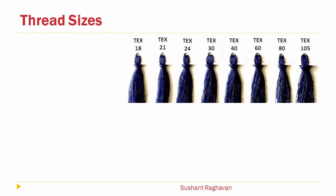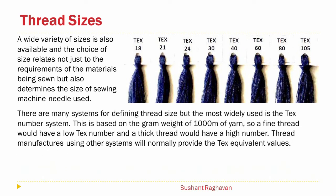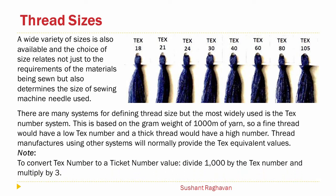Thread sizes. A wide variety of sizes is available, and the choice of size relates not just to the requirements of the materials being sewn but also determines the size of sewing machine needle used. There are many systems for defining thread size, but the most widely used is the tex number system. This is based on the gram weight of 1,000 meters of yarn, so a fine thread would have a low tex number and a thick thread a high number. Thread manufacturers using other systems will normally provide the tex equivalent values. To convert a tex number to a ticket number value, divide 1,000 by the tex number and multiply by three.